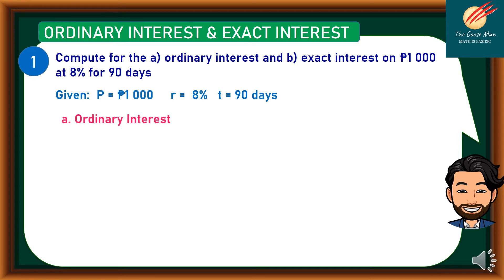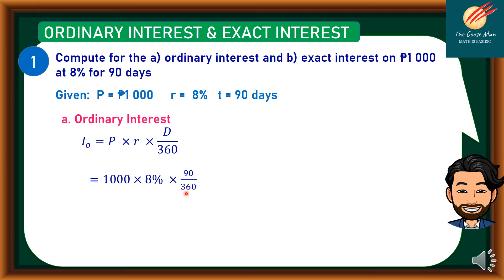Since we are looking for the Ordinary Interest, we will use the formula: I sub O is equal to Principal times Rate times D over 360. Substituting the values, we have 1,000 times 8% times 90, all over 360. Using our calculator, the answer is P20.